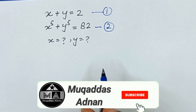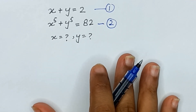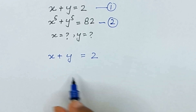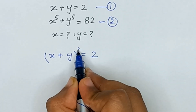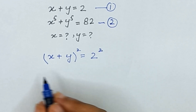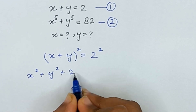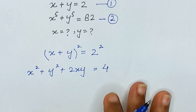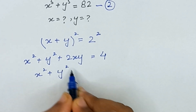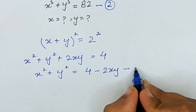Using these two equations we will find the values of x and y. First, I will use equation number 1: x plus y is equal to 2. Taking the square on both sides and using the formula (a+b)² = a²+b²+2ab, we expand to get x²+y²+2xy = 4. Rearranging gives us x²+y² = 4 minus 2xy, which we name equation number 3.